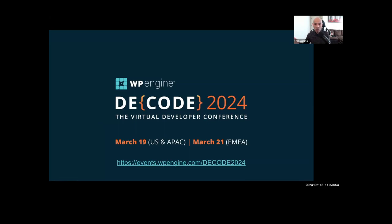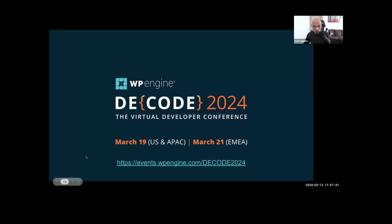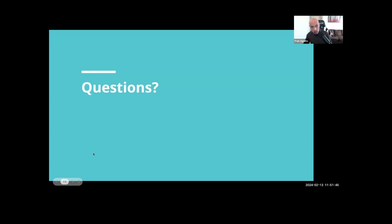We'll leave our Twitter/X handles and all links in the YouTube description. Also, DCORD is our developer-focused developer conference — on March 19th it'll be for US and APAC, and March 21st for EMEA. The link will be in the description as well. It's free and covers not only headless WordPress but all things in the WordPress community — latest technologies, optimization, security, and everything you'd want to know for creating WordPress and headless WordPress sites.